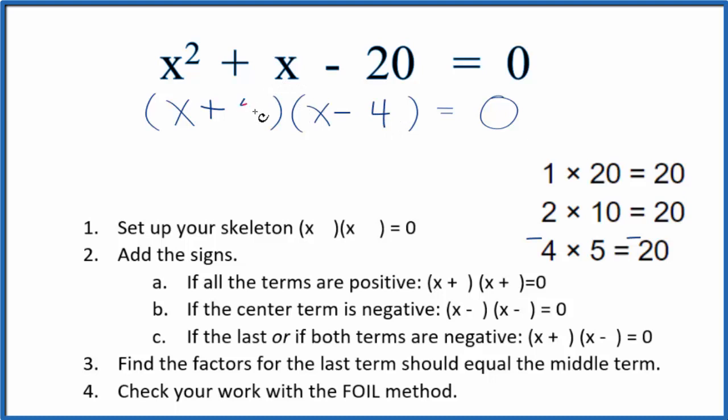Now we can check our work with the FOIL method. First term: x². Outside: x times -4 is -4x. Inside: that gives us positive 5x. Last term: 5 times -4 is -20, all that equals 0.